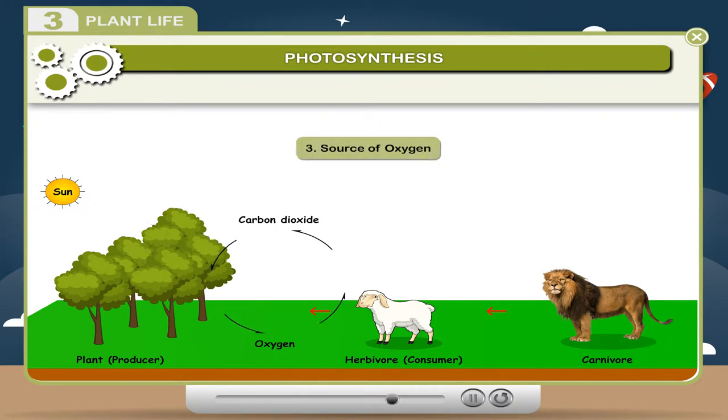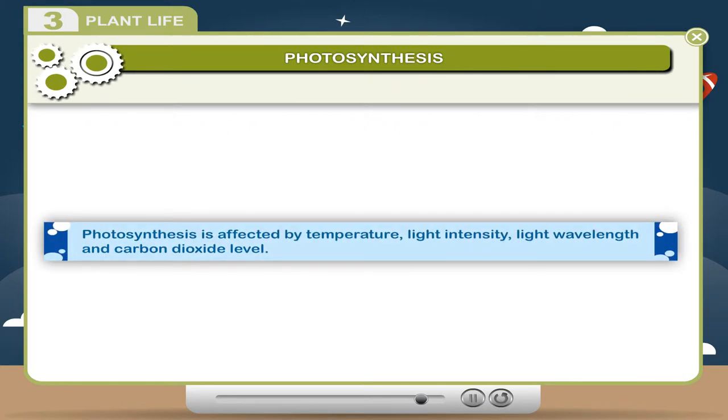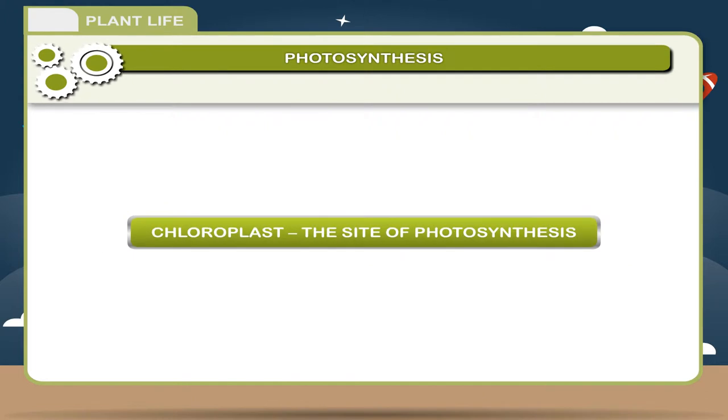3. Source of Oxygen: Photosynthesis is the only biological process which releases oxygen into the atmosphere. Photosynthesis is affected by temperature, light intensity, light wavelength, and carbon dioxide level.